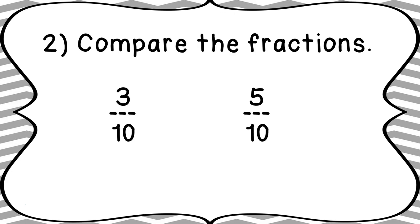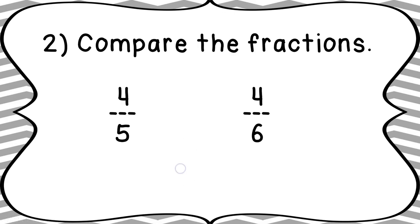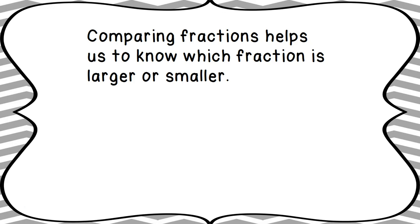Let's compare more fractions. First: the denominators are both ten, so we look at the numerators — three versus five. Five is larger, so three-tenths is less than five-tenths. Next: the denominators are different — fifths versus sixths — but the numerators are both four. Remember, when numerators are the same, look for the fraction with the fewest pieces. Five pieces is fewer than six, so those pieces are bigger, meaning four-fifths is greater than four-sixths.